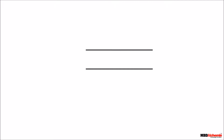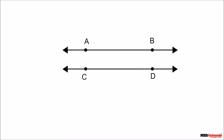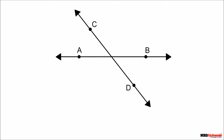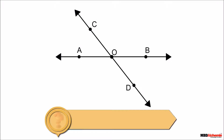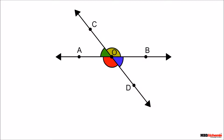Let's draw two line segments which can be extended in both directions to form two lines. If these lines are placed so that both lines intersect each other at point O, they form four angles: angle AOD, angle DOB, angle BOC, and angle COA.